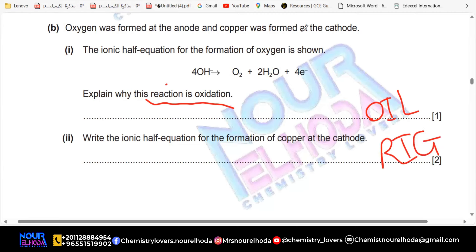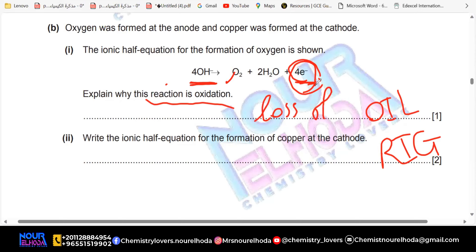Increasing in oxidation number — correct, that's true. Since the electrons are on the opposite side after the arrow, this means I'm losing electrons. This means it's oxidation, because loss of electron.